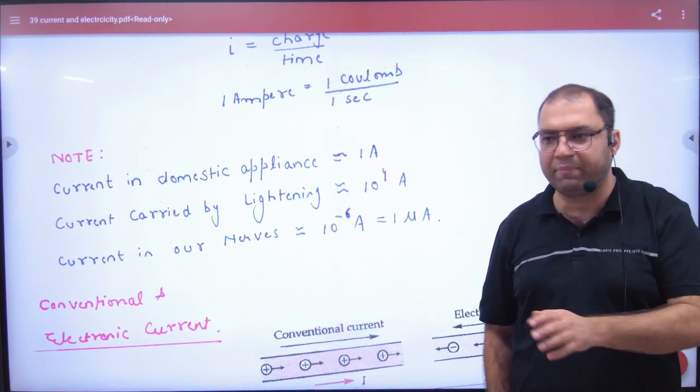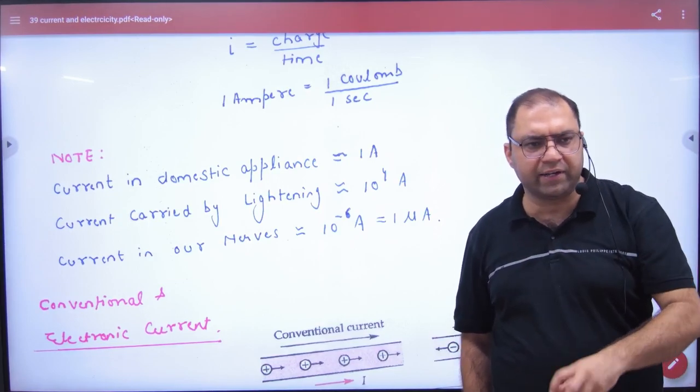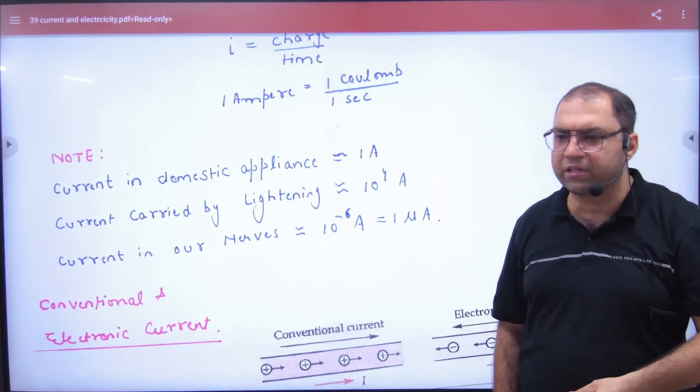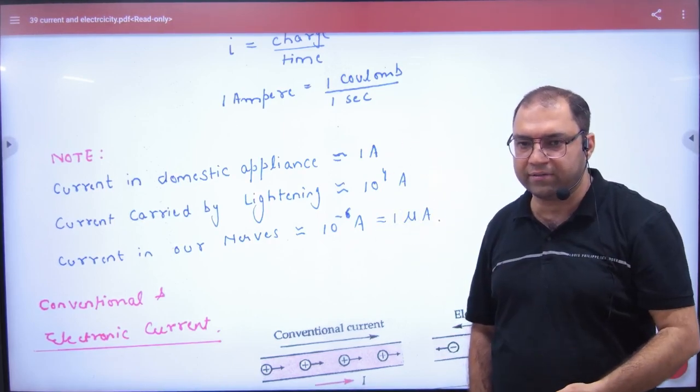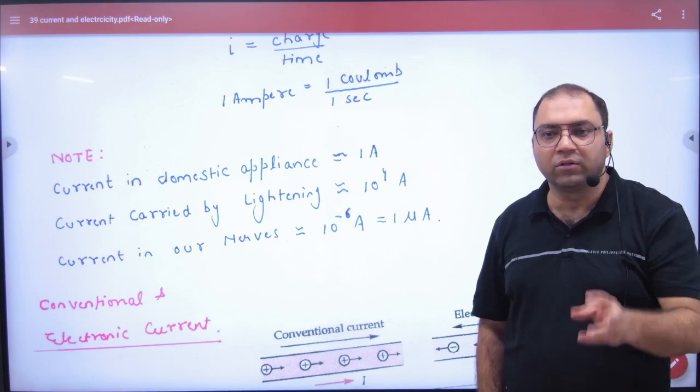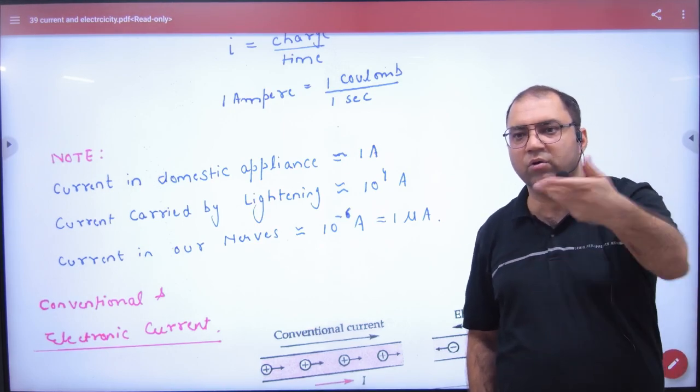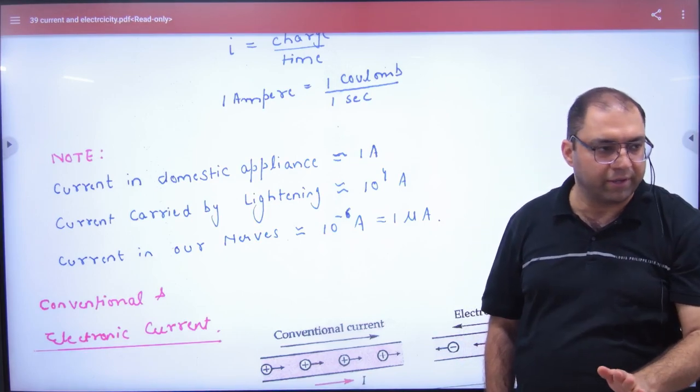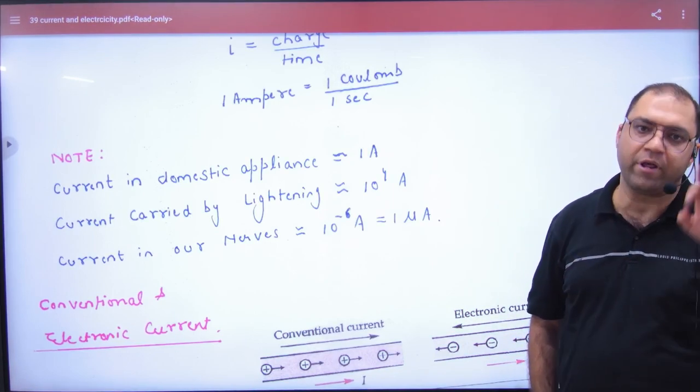In our homes, approximately 1 ampere, 2 ampere, 3 ampere, 4 ampere, 5 ampere, 8 ampere. When we work with electricians, we ask how many ampere switch to install. So basically, how much current will be drawn from it. But lightning is not the same, it's not just 1 ampere. The lightning carries a huge amount, 10 to the power 4 ampere.